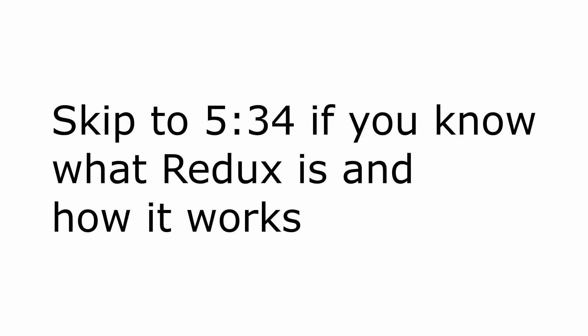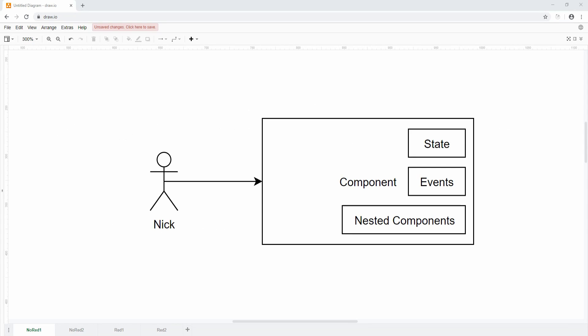Hello everybody, I'm Nick and in this video I want to talk about the problem of managing state in your Blazor application. In a very simple app you have your user and a bunch of components, and each component usually has a state internally represented by variables or properties. You also have events like onclick or type-ahead events, and you can have nested components. This is easy for a simple to-do list, but as you go into more complicated things, state management becomes a pain because everything can mutate your state unless you control it.